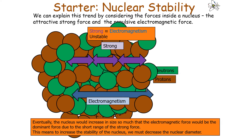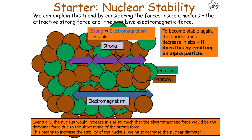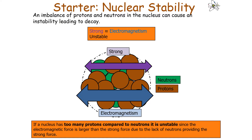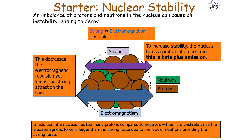To increase stability when the electromagnetic force dominates, the nucleus must decrease in size, which can be achieved by emitting an alpha particle. Alternatively, if a nucleus has too many protons compared to neutrons, it's unstable because the electromagnetic force exceeds the strong force due to the lack of neutrons. To correct this, you must decrease electromagnetic repulsion while keeping the strong attraction the same — achieved by a nucleus turning a proton into a neutron, which is beta plus emission.